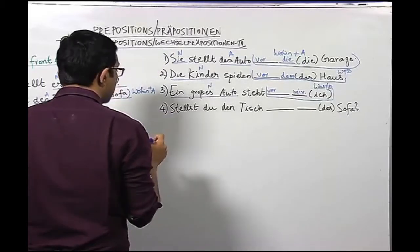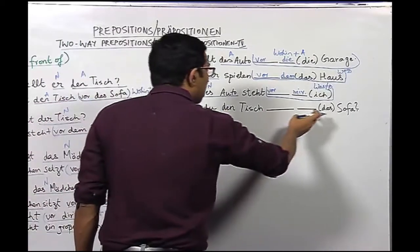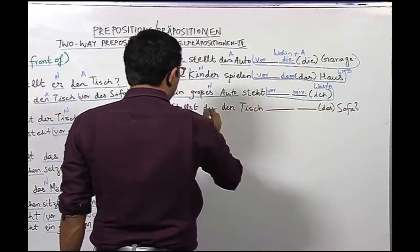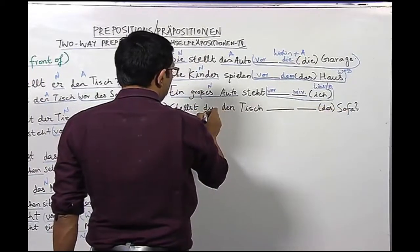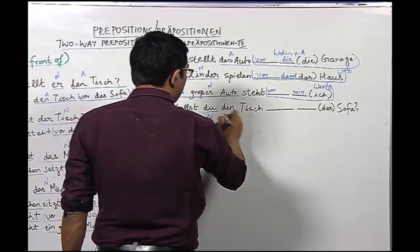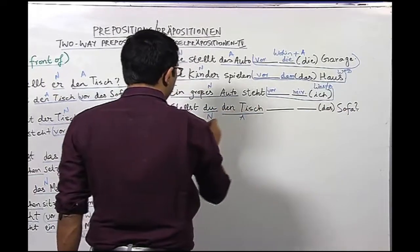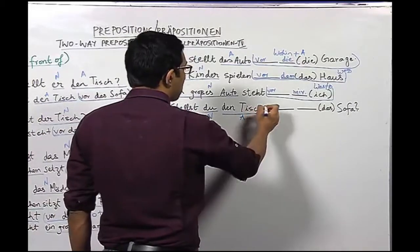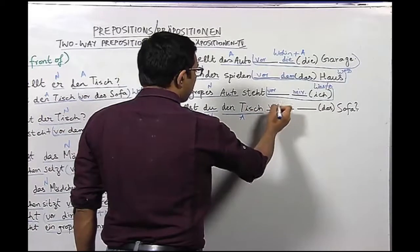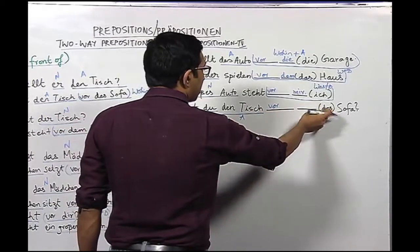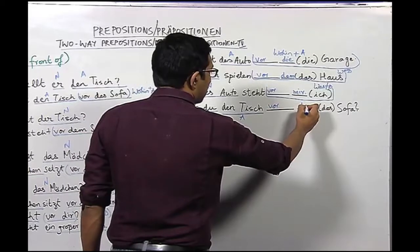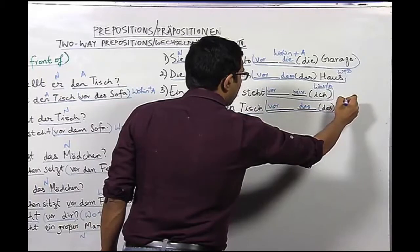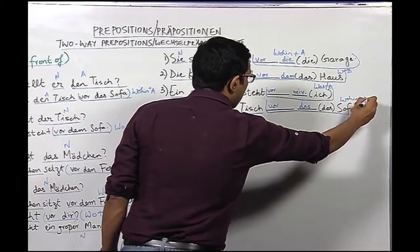Sentence number four: Stellst du den Tisch vor das Sofa? The nominative is 'du', 'den Tisch' is accusative. From the verb 'stellen' we understand we use 'vor' as an accusative preposition. The article 'das' remains 'das' in accusative, so the answer is: Stellst du den Tisch vor das Sofa? This gives us the wohin question answered in accusative.